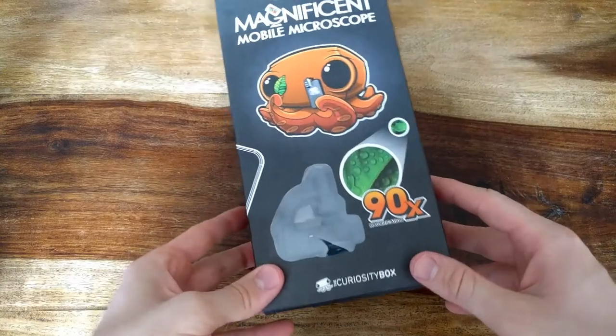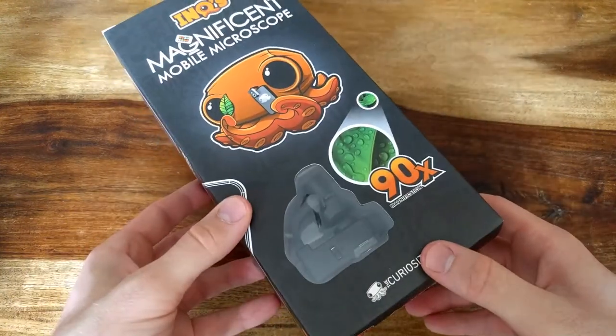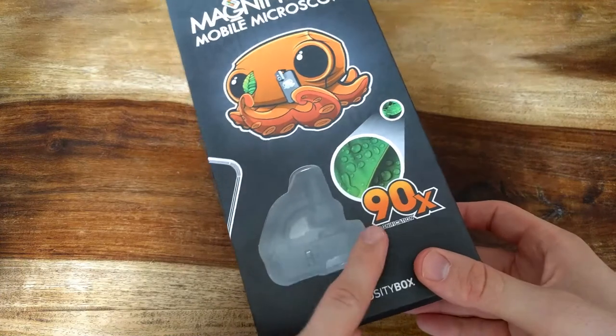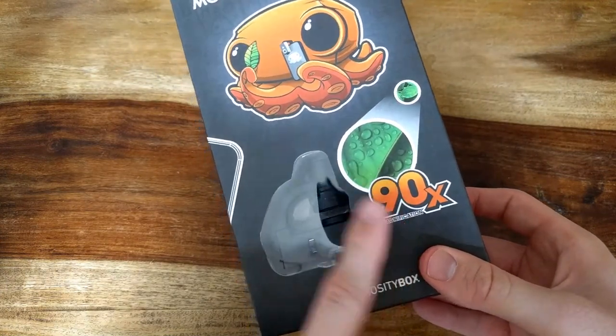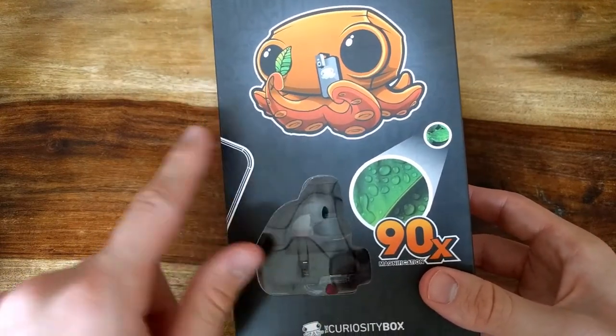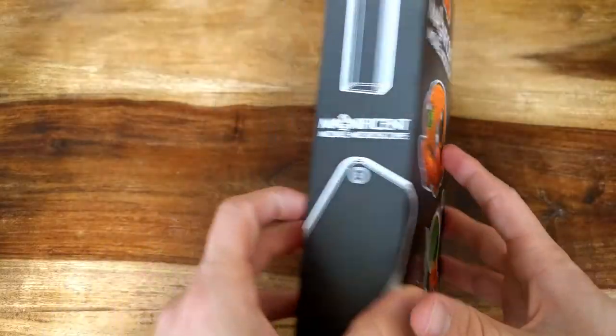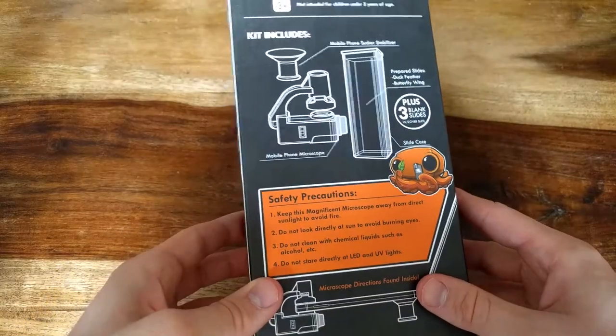This was a review of the magnificent mobile microscope by Curiosity Box. As you saw, it actually magnifies a lot. I don't know if it is actually 90 times magnification, but it does make the image look much bigger with great resolution. It is a cool toy for kids to make them curious about stuff, about things physical, and what they're made of, and for grown-ups as well.